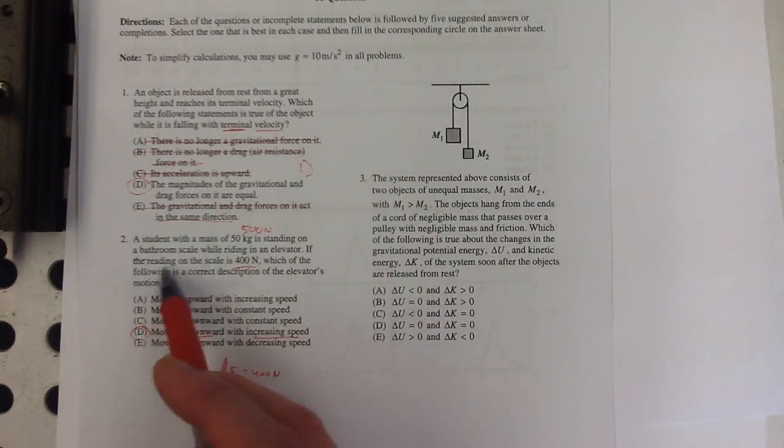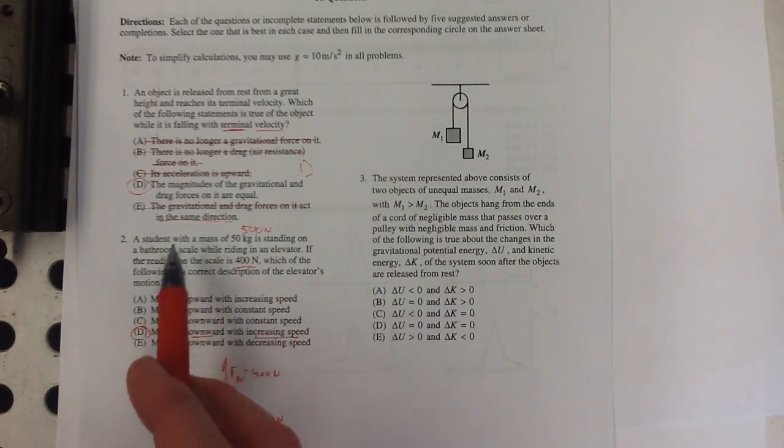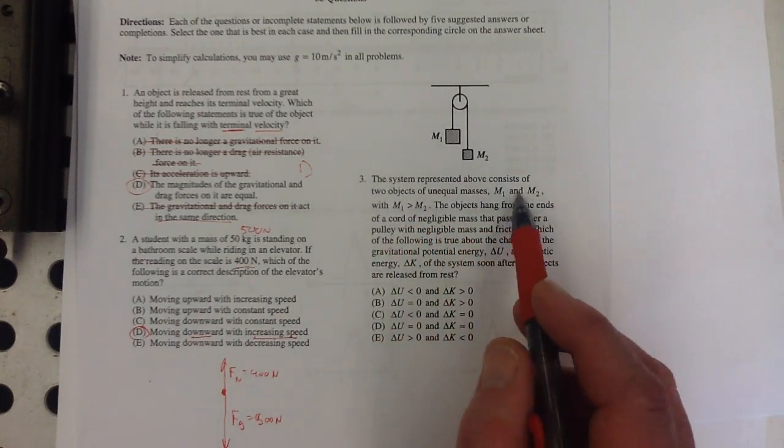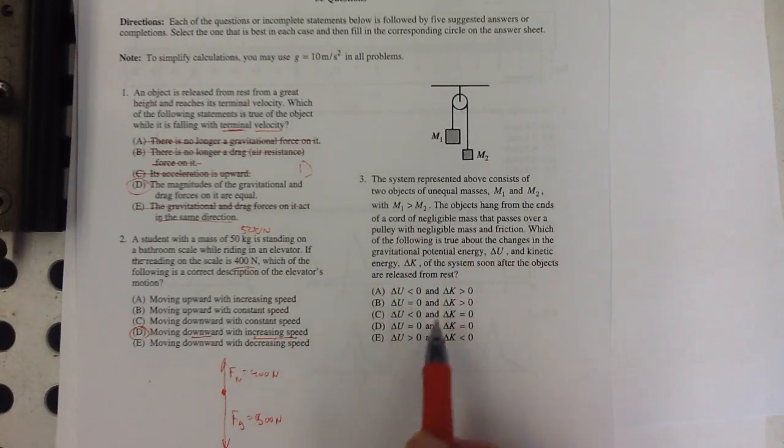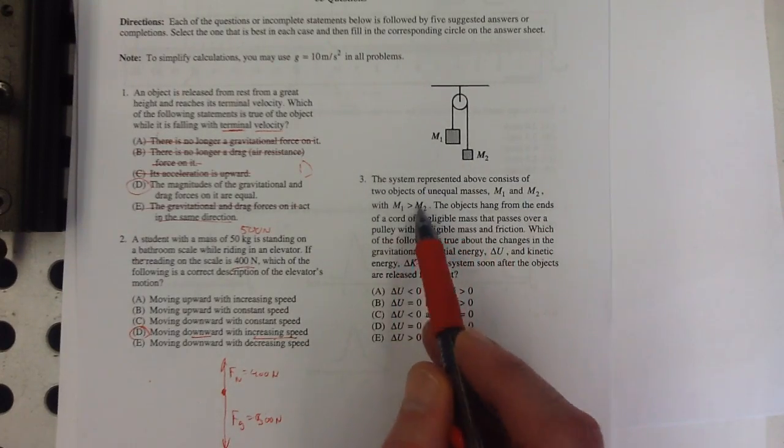Number three. Also it helps if you've ever ridden on an elevator before. That helps too. The system represented above consists of two objects. That's called an Atwood's machine. M1 is greater than M2.